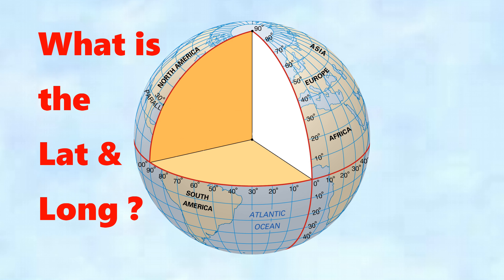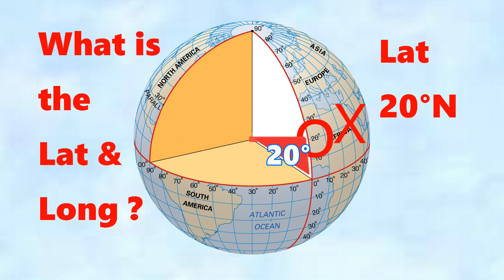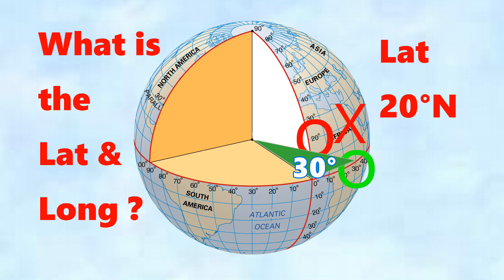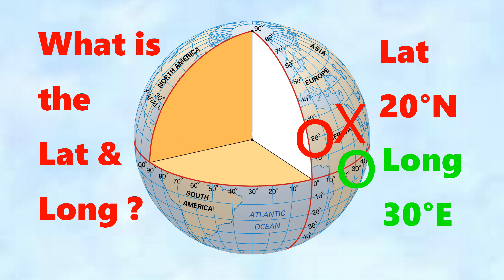Let's have a three-dimensional look at that. As mentioned, we measure the angle at the centre of the Earth. If we want to know the latitude of point X, the angle is 20 degrees — 20 degrees north from the equator towards the north pole. For the longitude, this is 30 degrees east from the Greenwich meridian heading east along the equator — an angle of 30 degrees east.